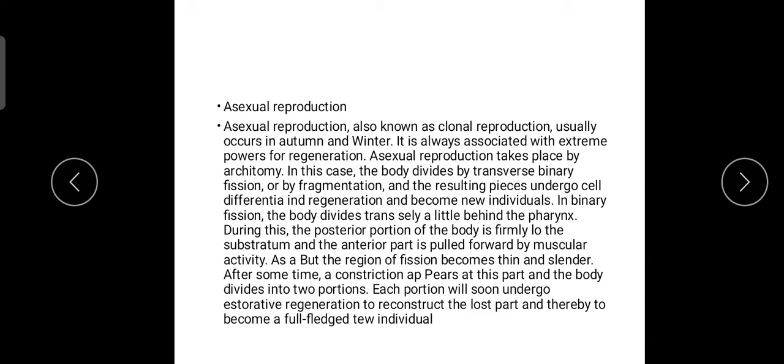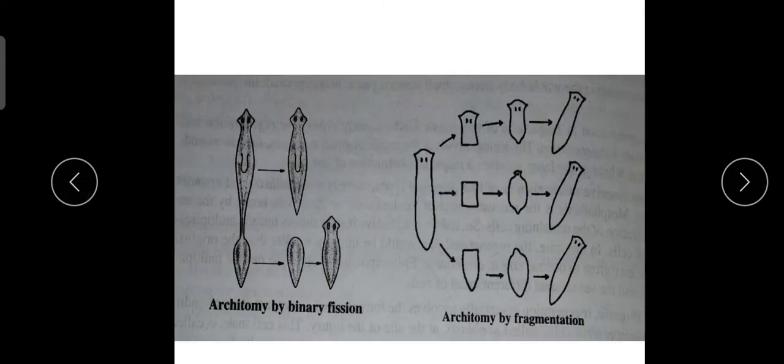Asexual reproduction takes place by architomy. Architomy is a process in which the body divides by transverse binary fission or by fragmentation. The body and resulting pieces undergo cell differentiation and regeneration and become new individuals.